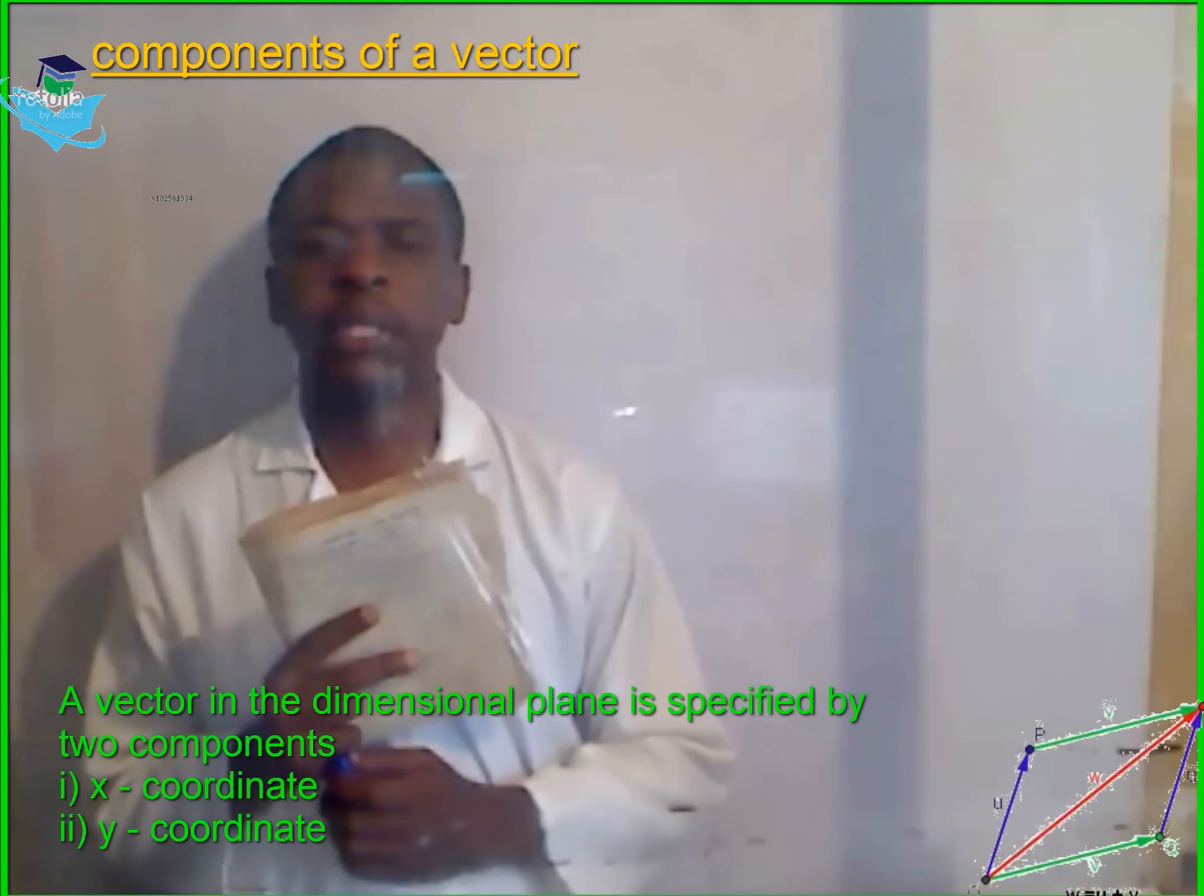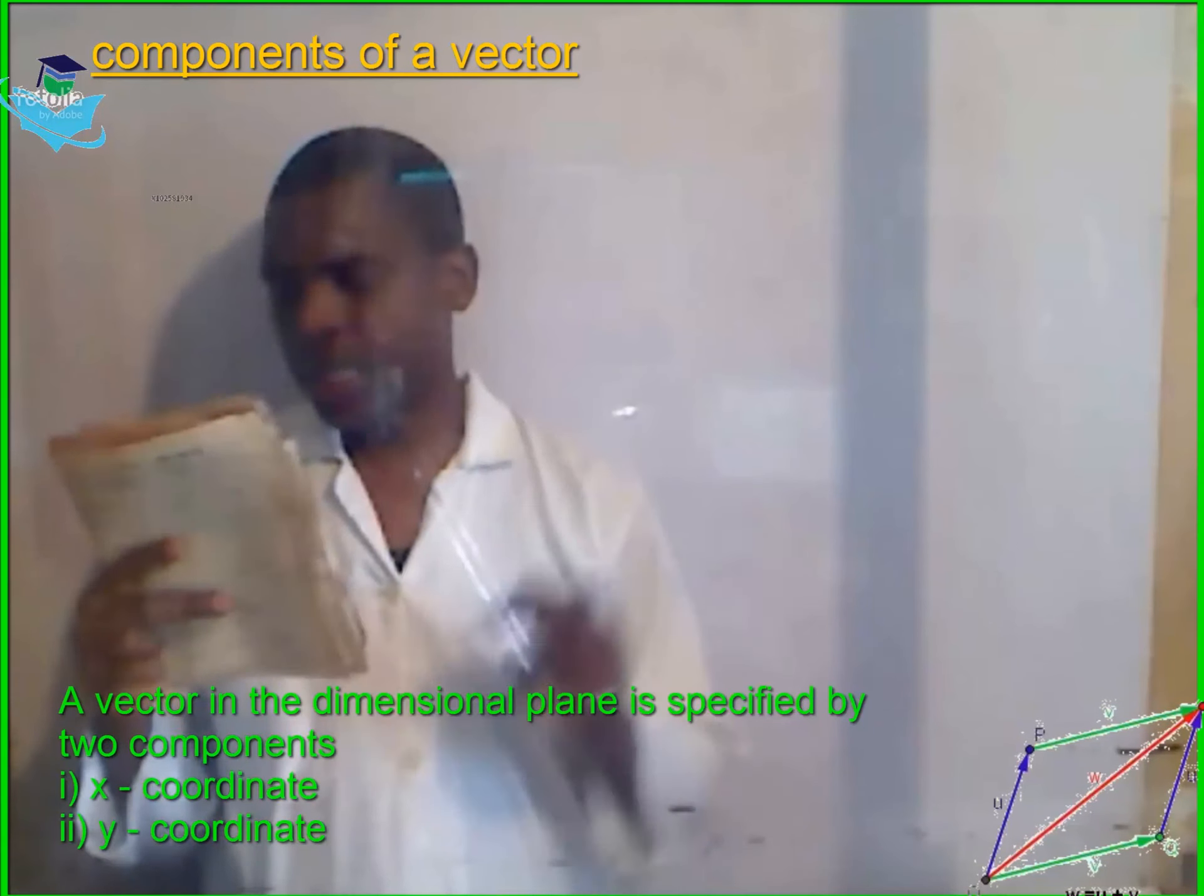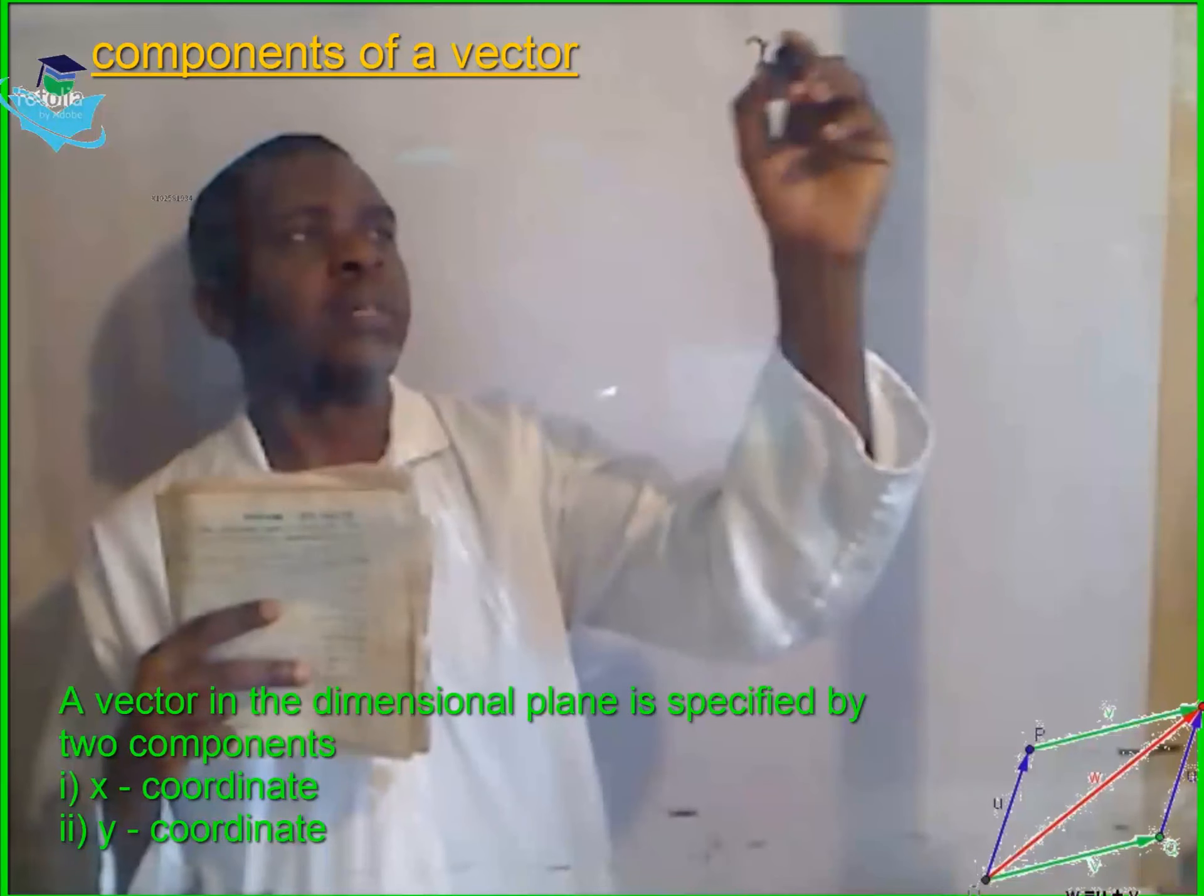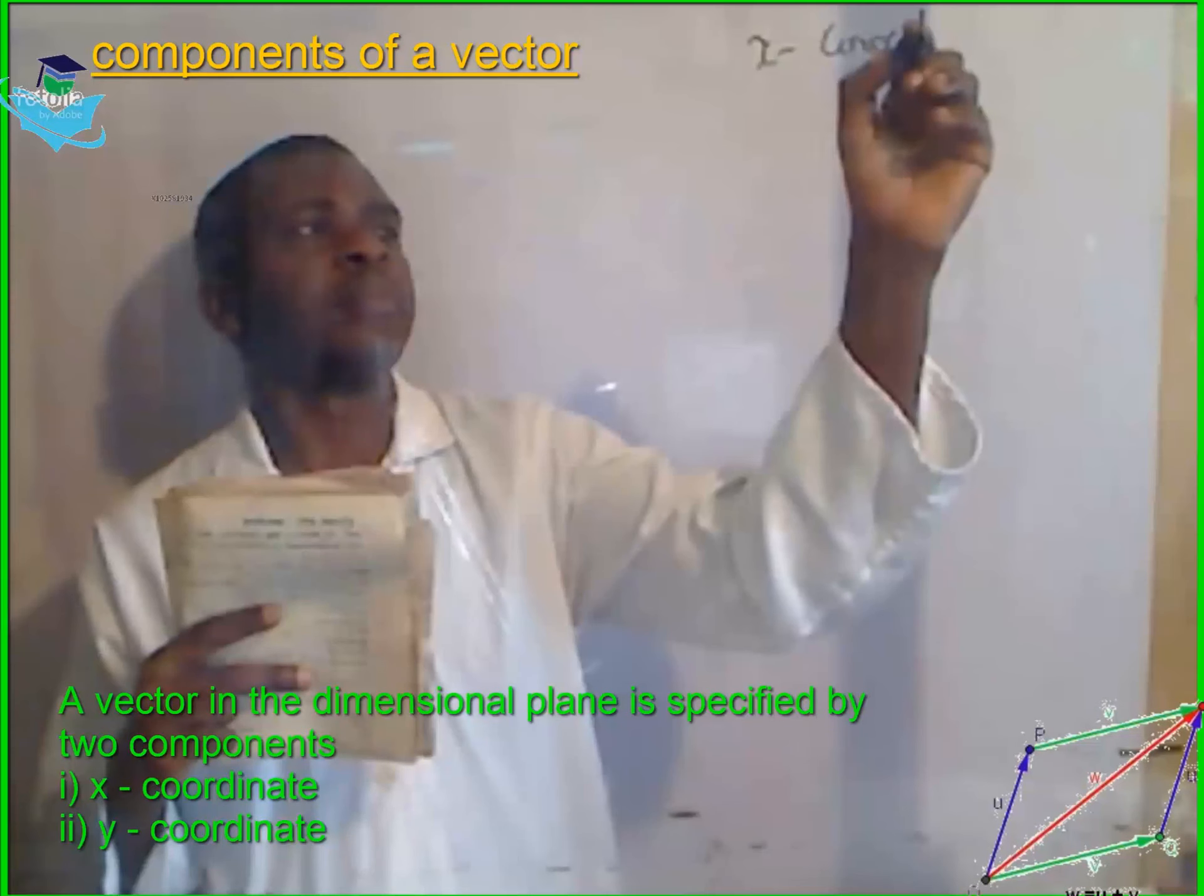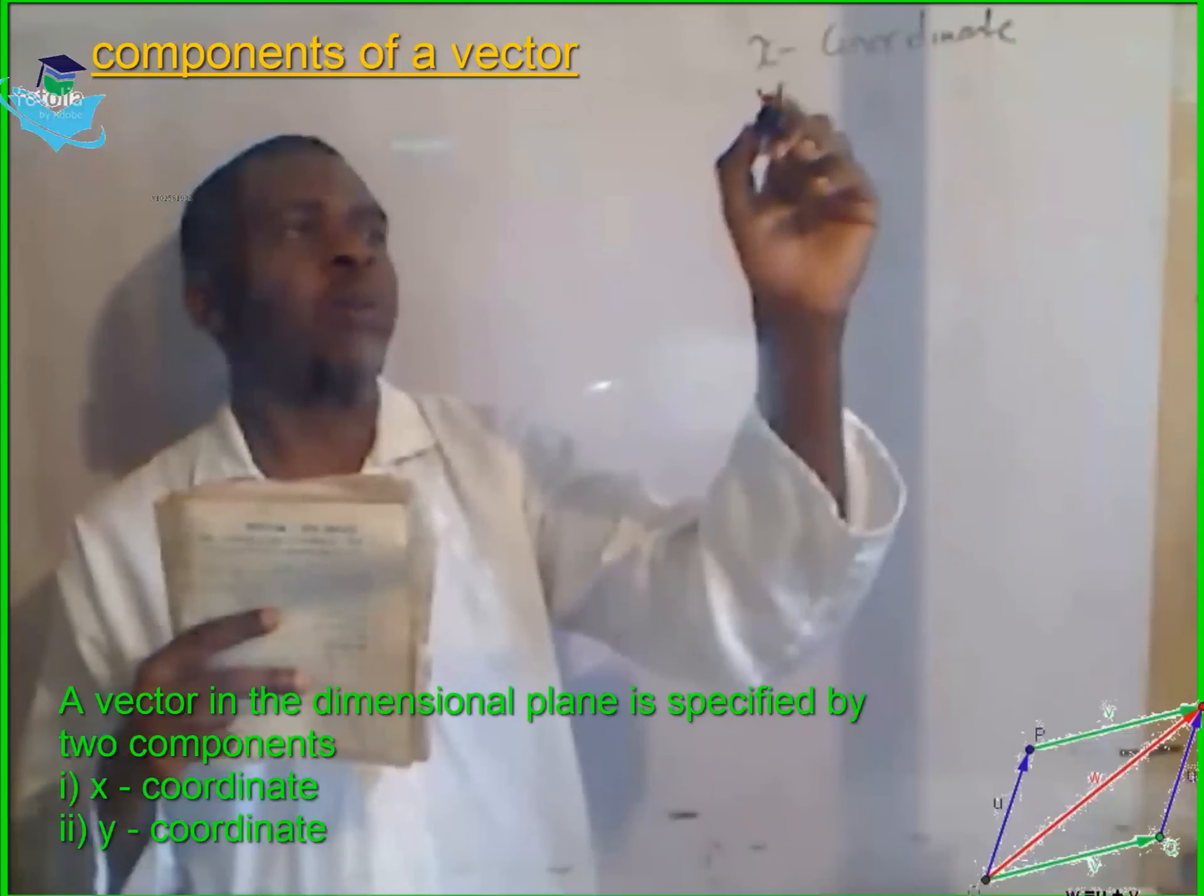Components of a vector. A vector in the dimensional plane can be specified by two components: the x coordinate and the y coordinate.